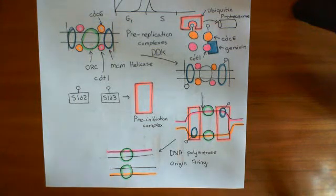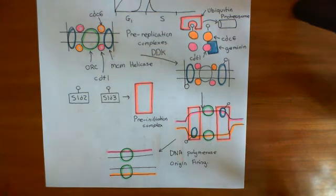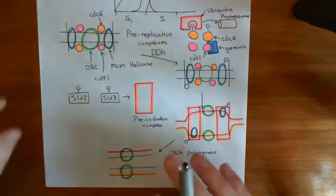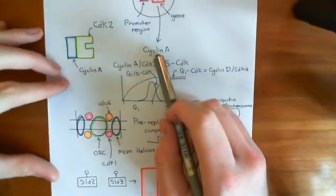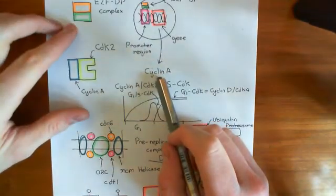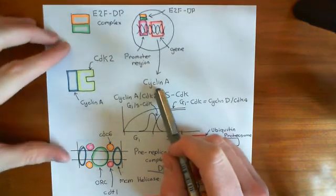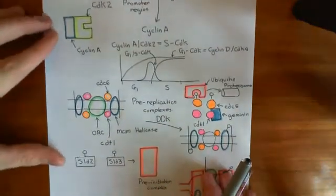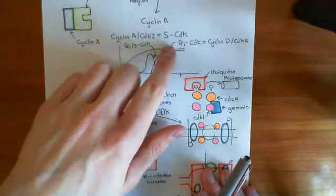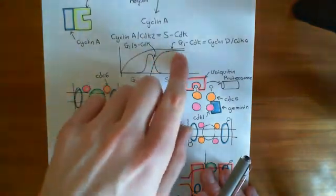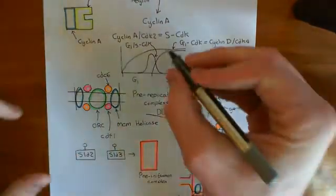Welcome to this next video on the G2M transition. In the previous video, we saw how to go into S phase: you need to increase the expression of cyclin A, and this is done by the E2F-DP complex, which is a transcription factor that will activate the expression of cyclin A. Cyclin A then binds to cyclin-dependent kinase 2 to form the S CDK, which rises in the S phase of the cell cycle.